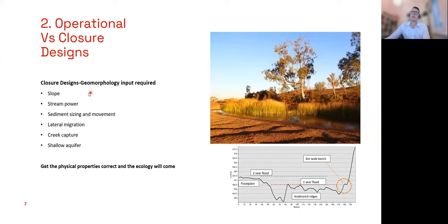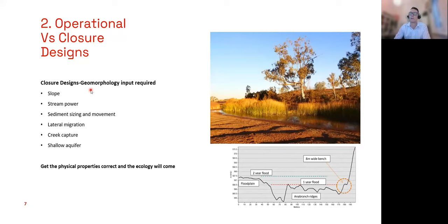When you move into closure designs, geomorphology input is required and you need to think much more broadly. Consider the slope, the stream power, how sediment moves through the system, the size of sediment, how it compares to what the creek wants to move, lateral migration of the system, risks of creek capture, and the shallow aquifer. If you can get all the physical properties correct, the ecology will come after — that's one of the keys. It's impossible to do the reverse.